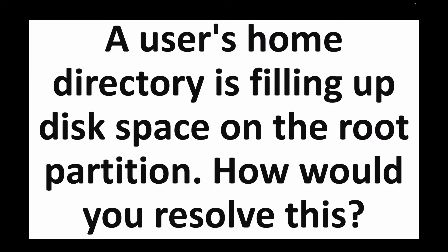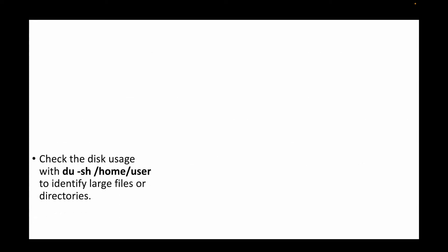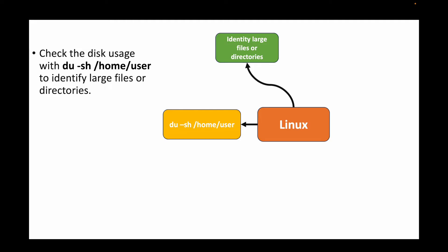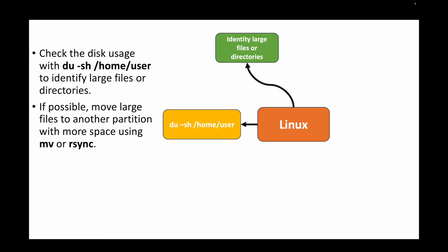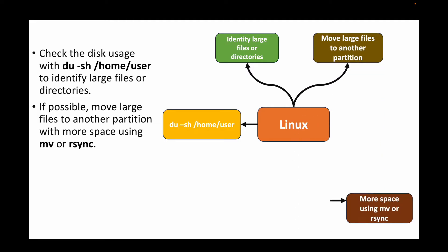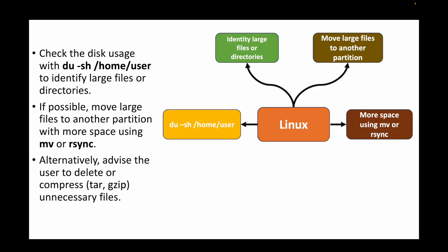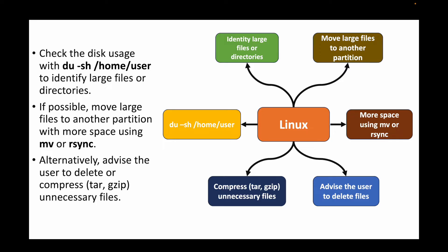The next question: a user's home directory is filling up disk space on the root partition — how would you resolve this? First check disk usage with du -sh and the user's directory path to identify large files or directories. If possible, move them to another partition using mv or rsync, or advise the user to delete unneeded files or compress them to free up space.